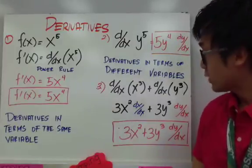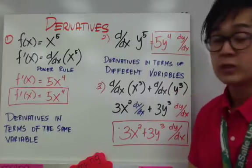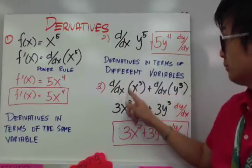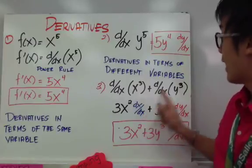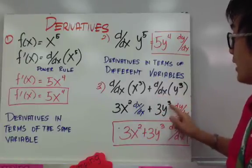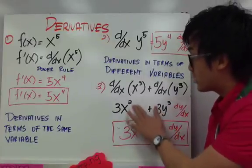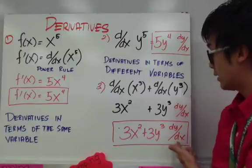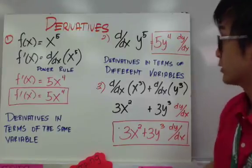For example number three, we have two functions: x cubed and y cubed. We're going to find the derivative of x cubed and the derivative of y cubed in terms of x. The derivative of x cubed in terms of x is simply 3x squared dx over dx. And the derivative of y cubed in terms of x is 3y squared dy over dx. To simplify, we don't write dx over dx because it equals 1, so the final answer is 3x squared plus 3y squared dy over dx. That's how we use implicit differentiation with two variables.